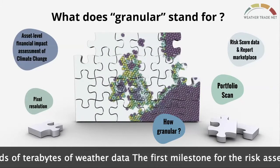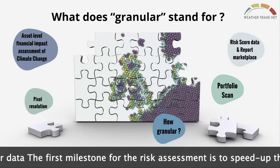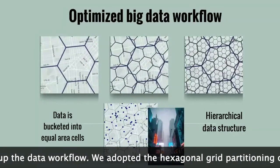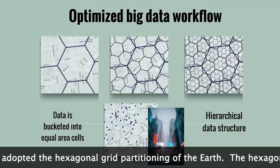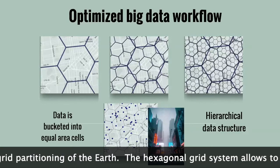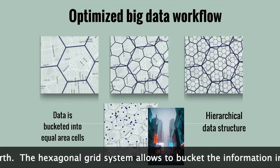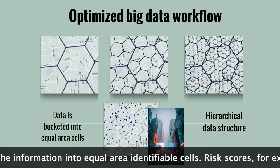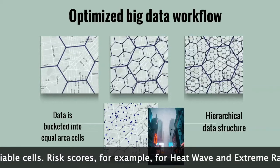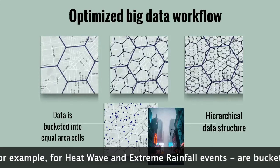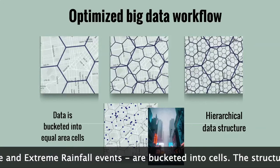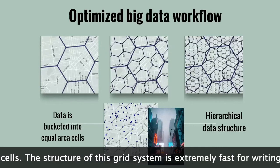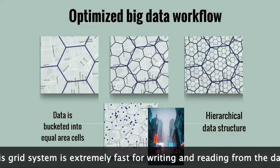The first milestone for the risk assessment is to speed up the data workflow. We adopted the hexagonal grid partitioning of the Earth. The hexagonal grid system allows to bucket the information into equal area identifiable cells. Risk scores for heat wave and extreme rainfall events, for example, are bucketed into cells. The structure of this grid system is extremely fast for writing and reading from the database.